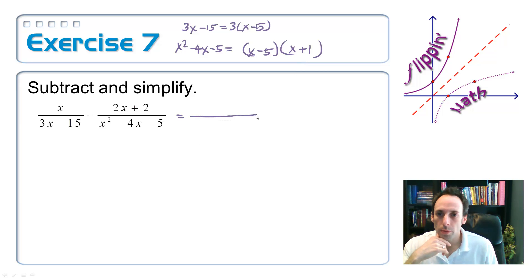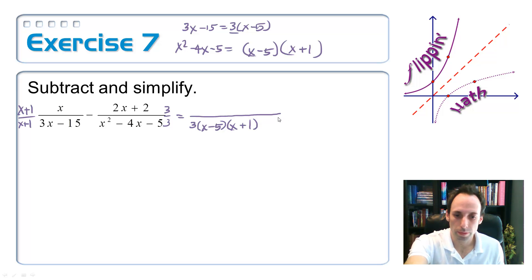I'm going to go ahead and write down what my common denominator is going to be. I need a 3 here. I need an x minus 5. They both have one of those. And I have an x plus 1. So, if that's the common denominator, what was I missing from the first denominator? I was missing a factor of x plus 1. That's what I'm going to have to multiply the first fraction by. And what was I missing from the second one? I'm just missing a 3. So, this one is going to be multiplied by 3 over 3. This fraction bar got a little bit too long. I'm going to shorten that.